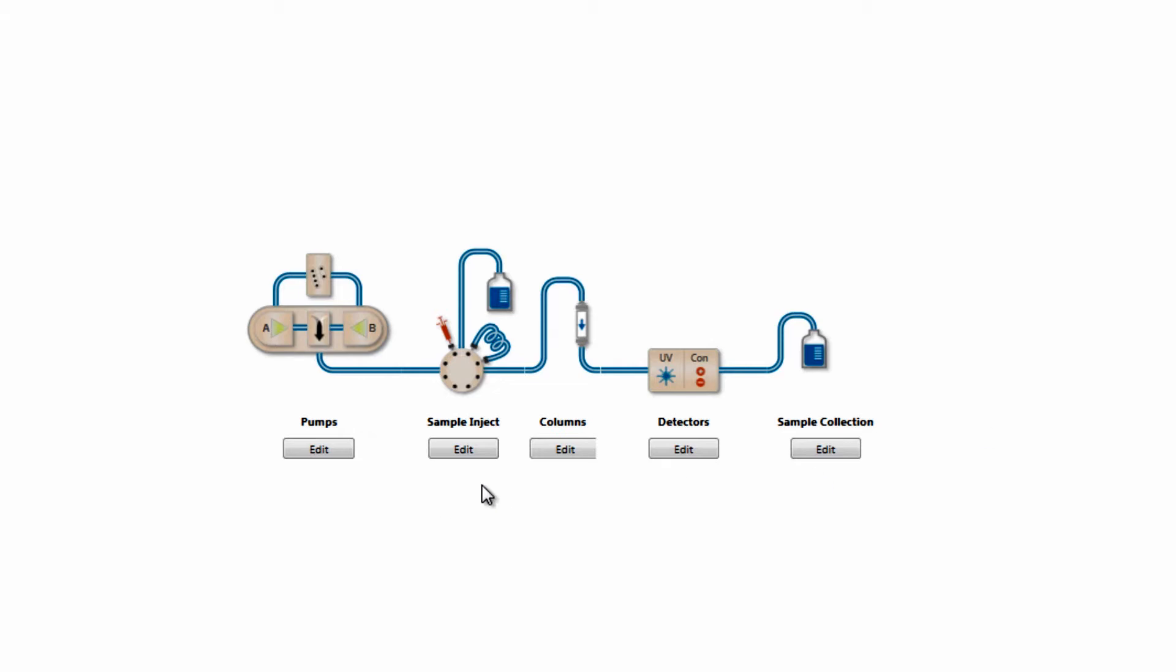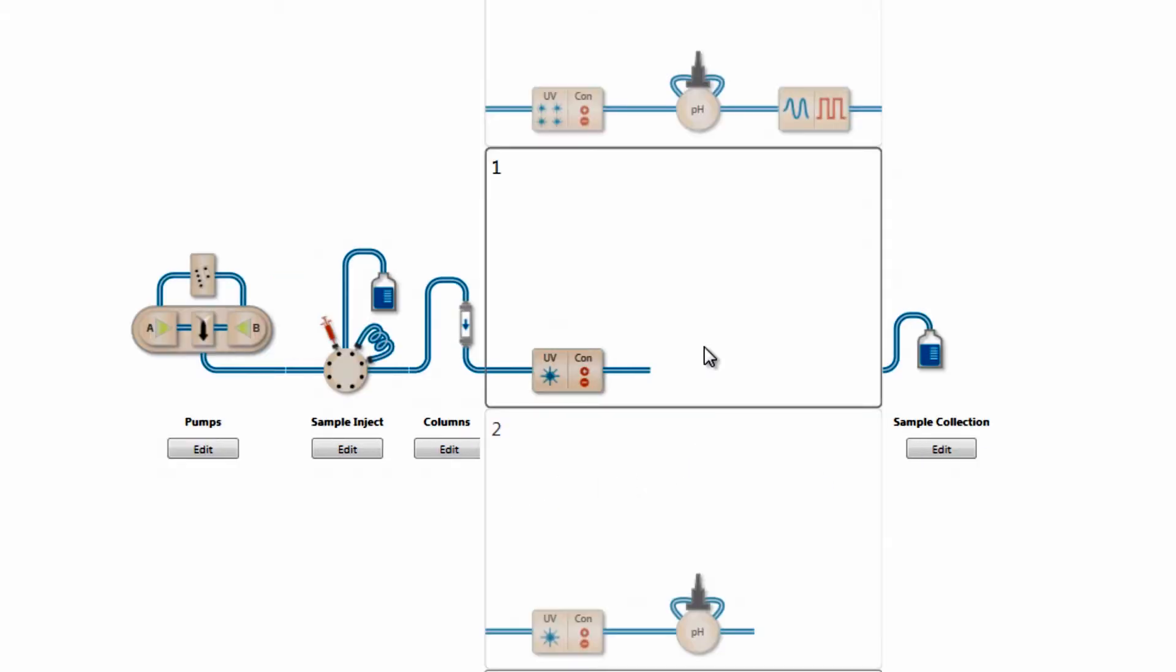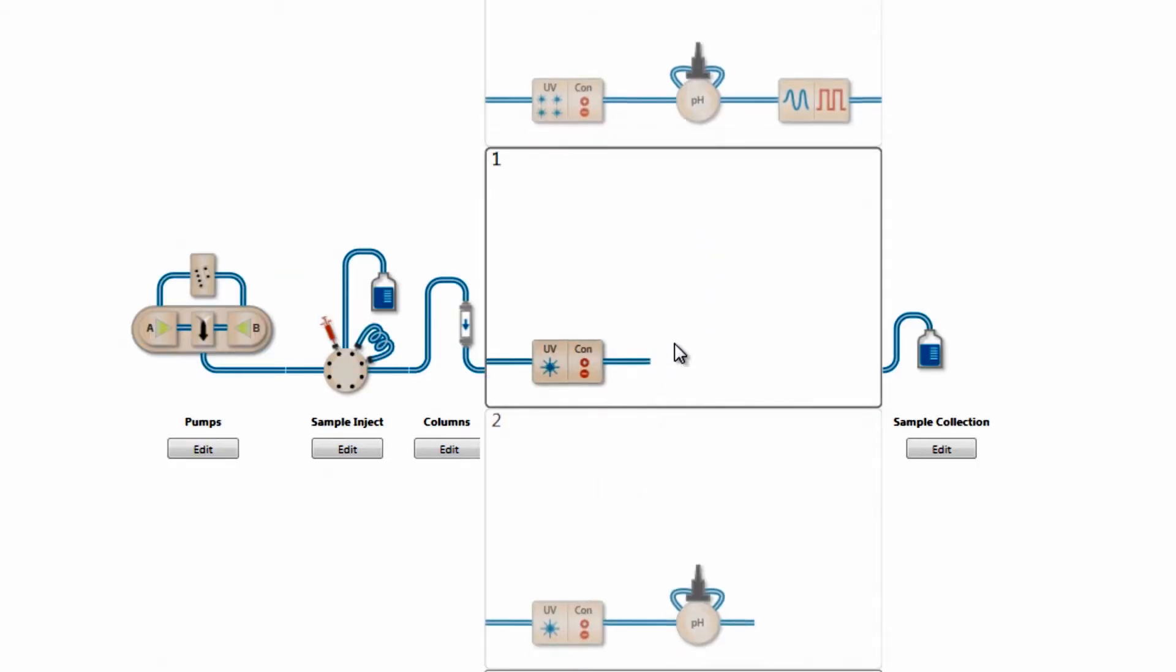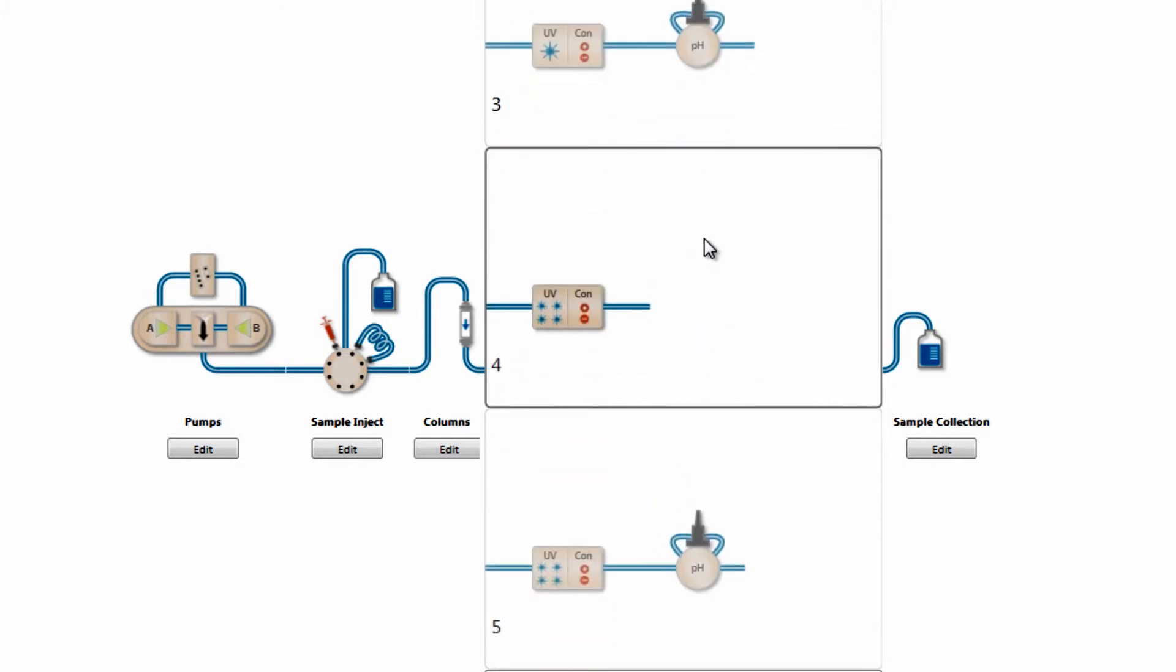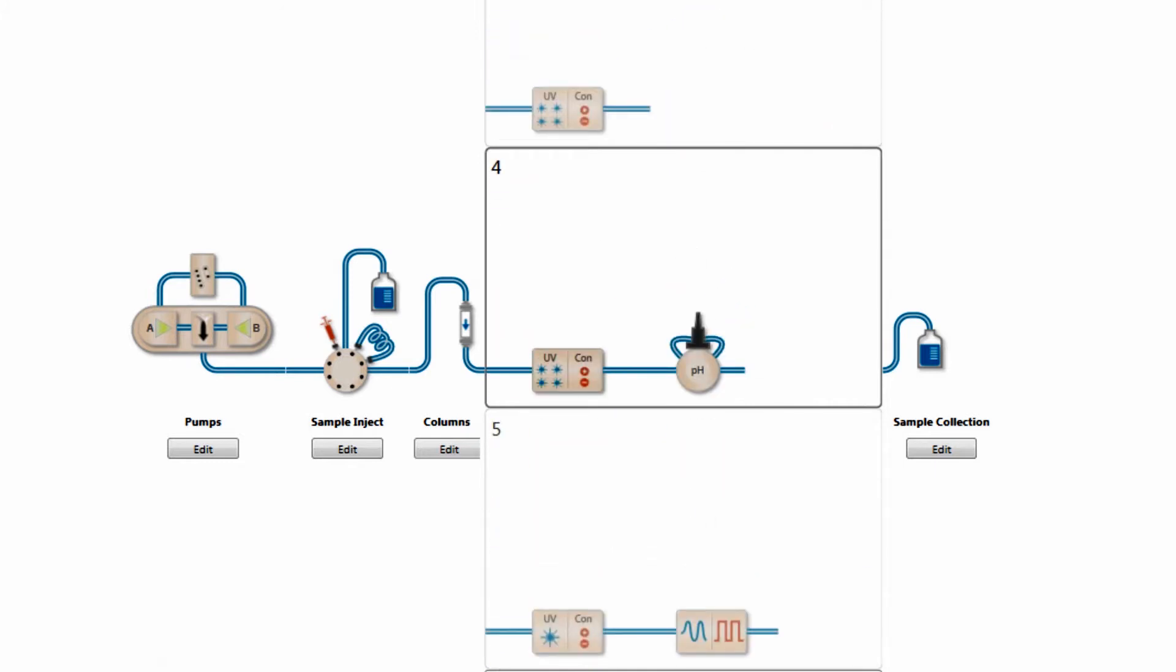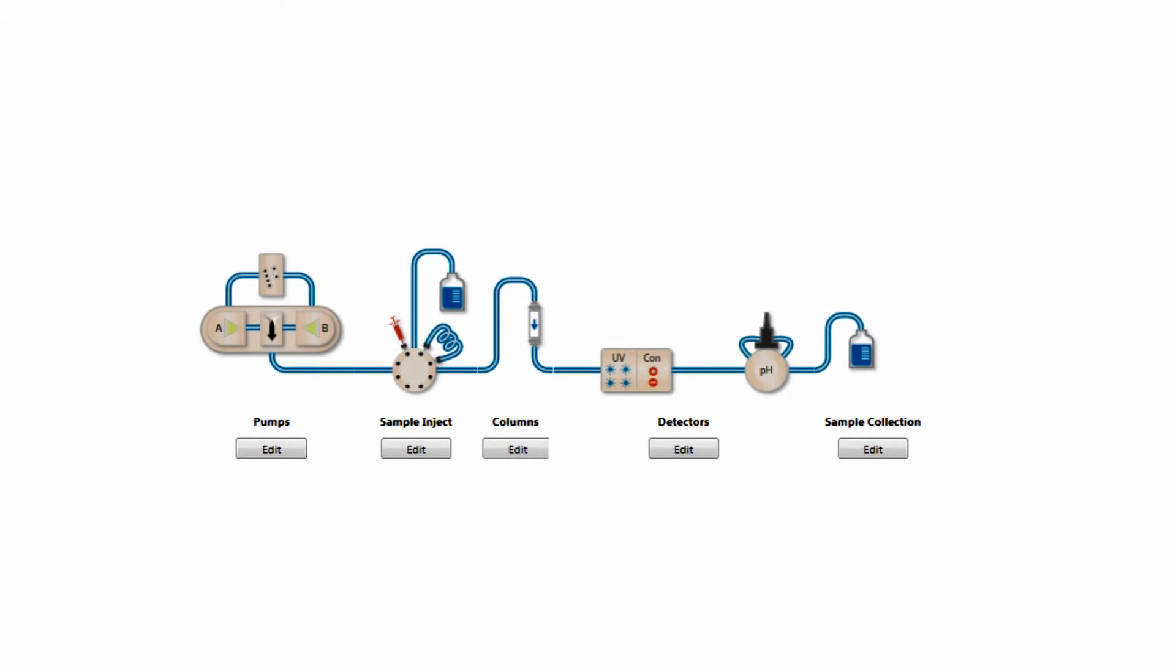In the flow path, the NGC-PH valve is placed after the UV detector and conductivity monitor, and also the back pressure regulator if it is present. The pH valve is always the last device in line.